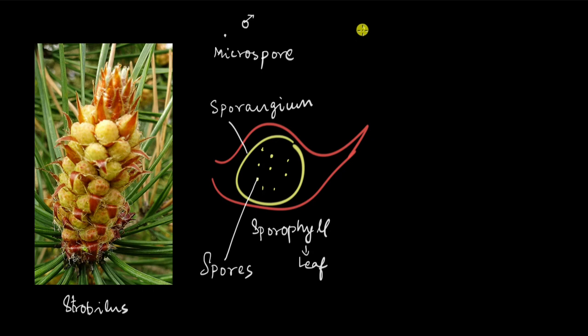A megaspore is much bigger, and this is female. Whatever is concerned with male spores are called micro. So this is a microsporangium - the yellow big circle is a microsporangium, and the tiny dots are the microspores.